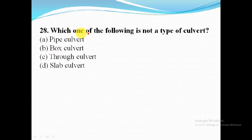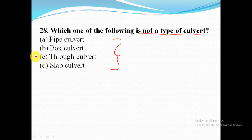The bridge having its floor flush with the bed of a stream is known as a causeway. Which one of the following is not a type of culvert? Through culvert is not a type of culvert. The remaining three — pipe culvert, box culvert, and slab culvert — are types of culvert.